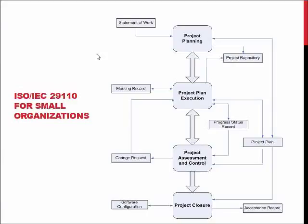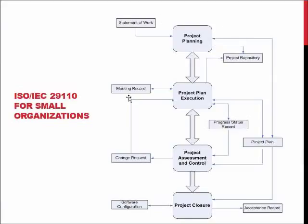The idea in this model — shown here with only the management part on this slide — is to define that you should have a project repository, you should have plans, you should have assessment and control, have some sort of project plan, and generate acceptance records and so on. So not only is this defining how the work should be done on the software implementation layer, which is below this management layer, but it is also telling the basic functionalities of what we are doing when we are using the 29110 model for software development.